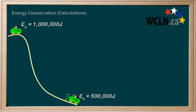So, our question is, how much energy was lost between the top of the hill and the bottom of the hill due to friction?